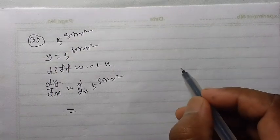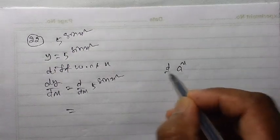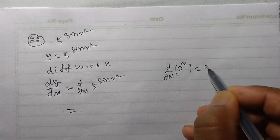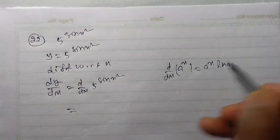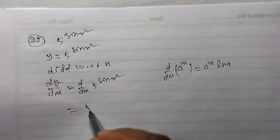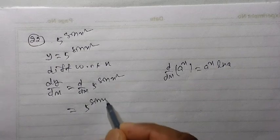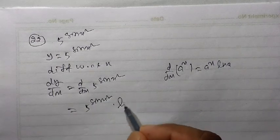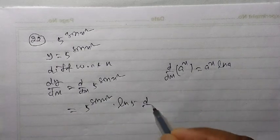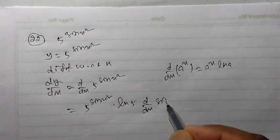dy by dx is equal to d/dx of 5 to the power sin x square. This is in the form of a to the power x. You know the derivative of a to the power x, that is a to the power x ln a. So here also, 5 to the power sin x square ln 5, again derivative of sin x square.